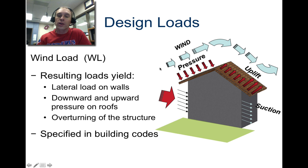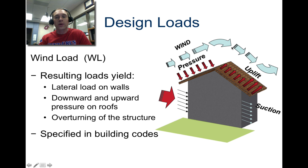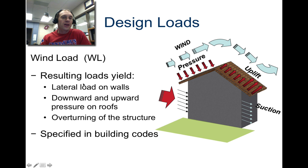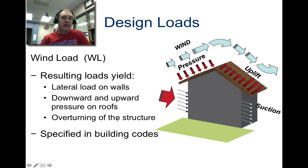Wind load: if you have wind blowing over the top of a building, you have a downward pressure, but from aerodynamics, as the wind comes over the top it actually creates a negative pressure that uplifts the roof — it tries to pull the roof right off. That's why in tornadoes, roofs sometimes get ripped off. Winds cause lateral loads on walls, downward and upward pressure on the roof, and they could overturn the structure. These are specified in building codes.